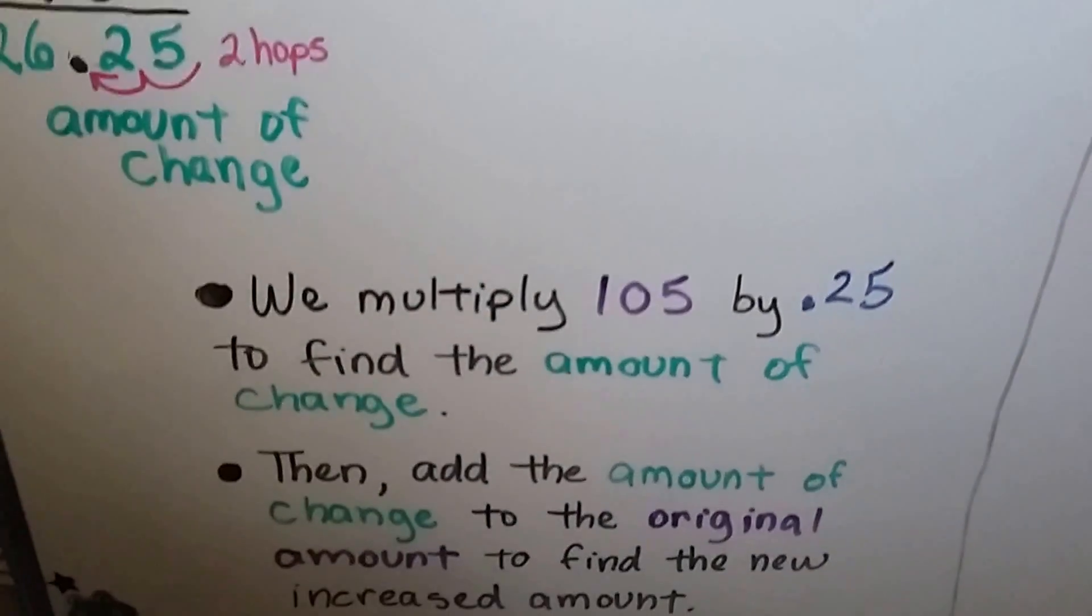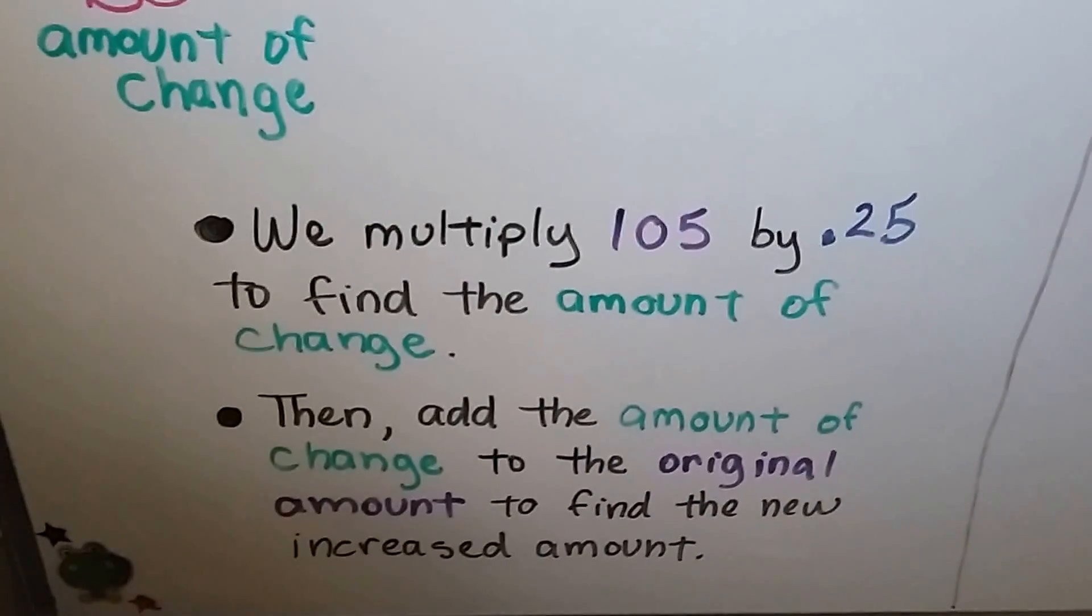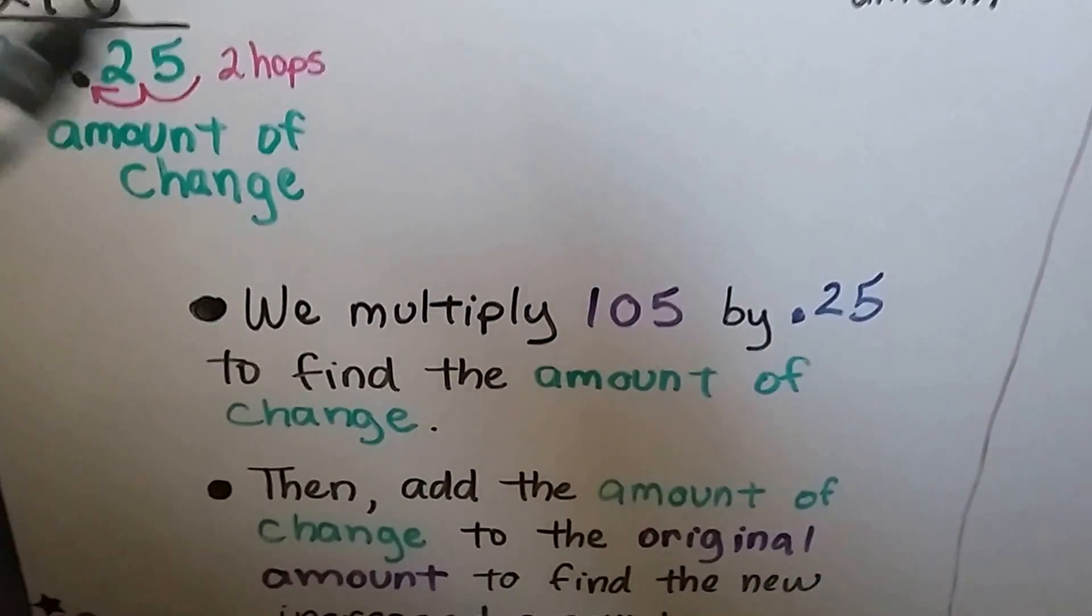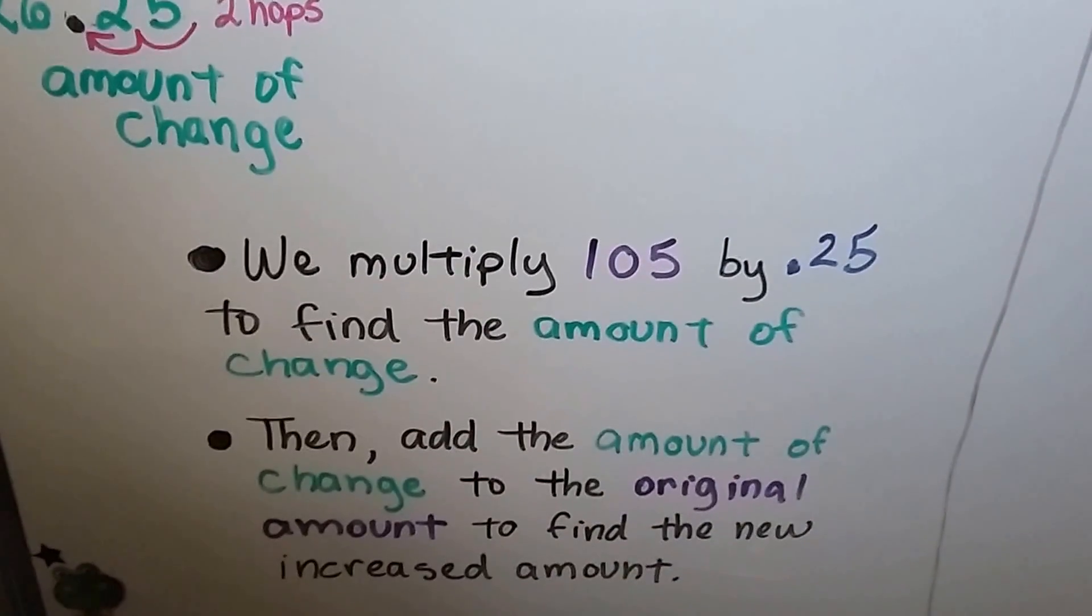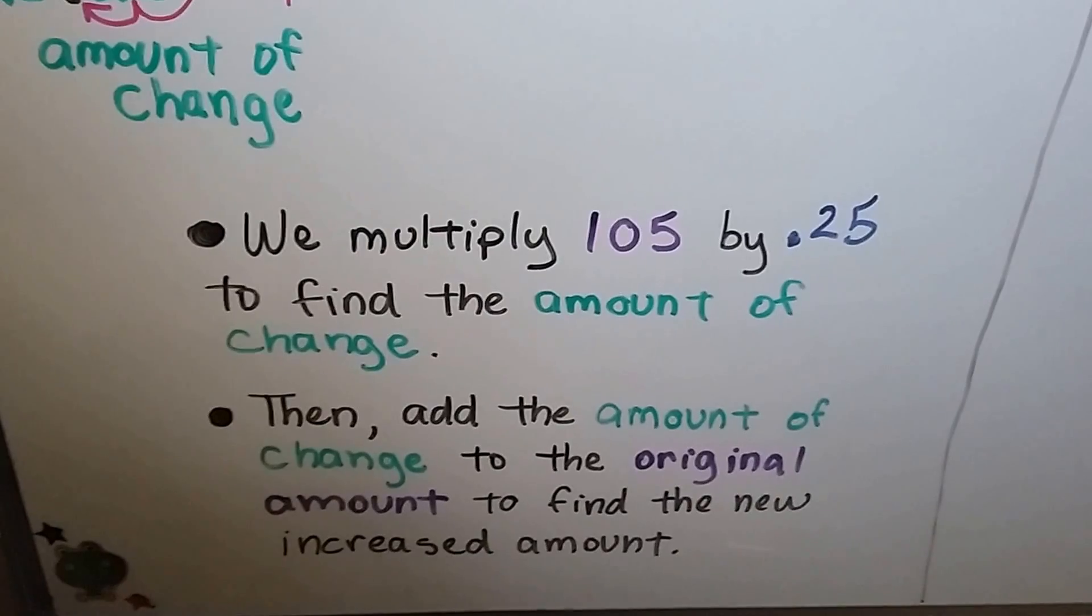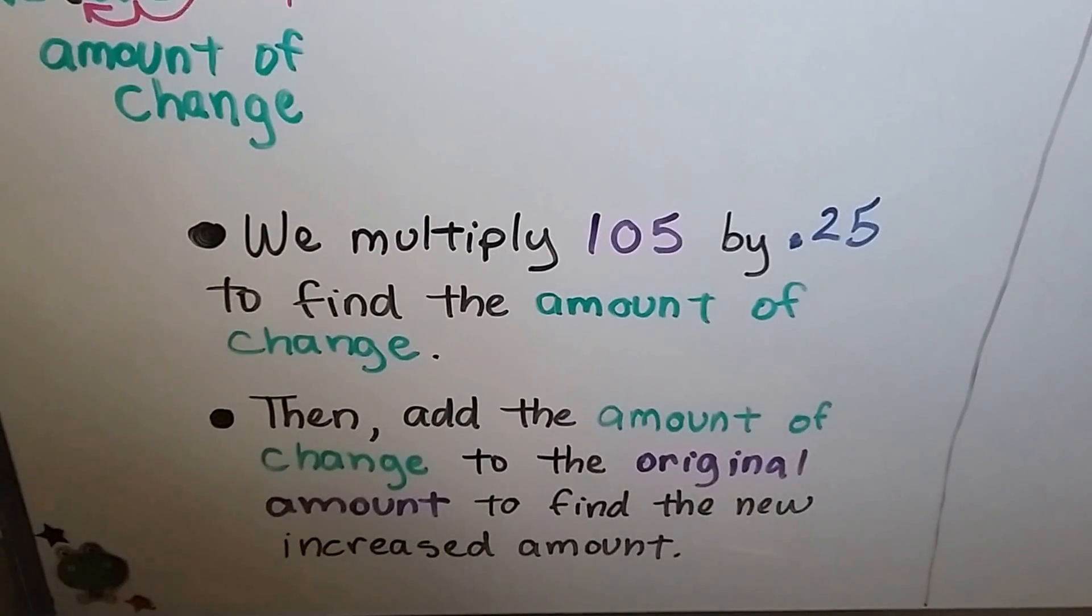We multiply the 105 by the .25 to find the amount of change. Then, we add the amount of change to the original amount to find the new increased amount.